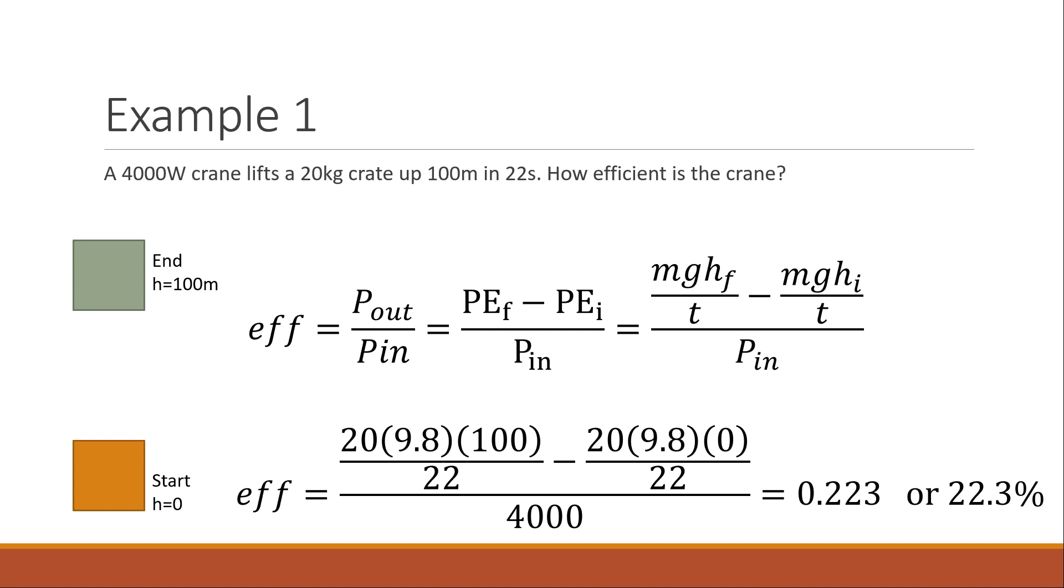My power change in potential energy over time over my power input. My output change in height is mgh. So 20 times 9.8 times 100 over the time minus the initial 20 times 9.8 times 0 over 22, and that's all over the power input. That 4000 watts is the crane because the crane is trying to lift this crate. So that's the input. We punch it in there and we get a number of 0.223. Now 0.223 is just 22.3%.